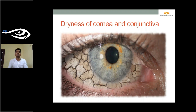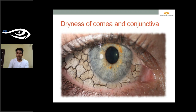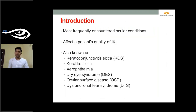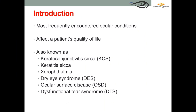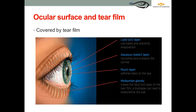In short, dry eye is the dryness of the cornea and conjunctiva triggered by tear film instability and tear film hyperosmolality. There are various other names for dry eye, such as keratoconjunctivitis sicca, keratitis sicca, xerophthalmia, dry eye syndrome, ocular surface disease, and dysfunctional tear syndrome. These are frequently occurring conditions that can affect the patient's quality of life and decrease productivity at the workplace.